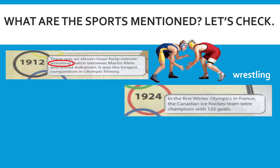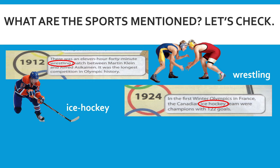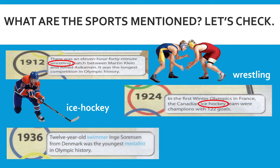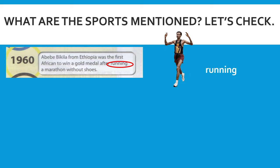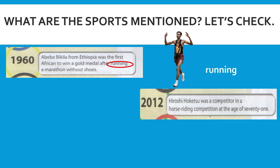Next, in 1924, in the first Winter Olympics in France, the Canadian ice hockey team were champions with 122 goals. In 1936, 12-year-old swimmer Inger Sorensen from Denmark was the youngest medalist in Olympic history — since Inger Sorensen was a swimmer, that means swimming. In 1960, Abibi Bekela from Ethiopia ran a marathon without shoes, so the sport mentioned is running. In 2012, Hiroshi Hokusu competed in a horse riding competition, so the sport is horse riding.